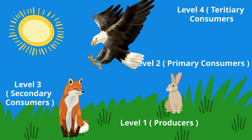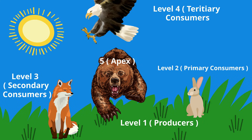Level 5 are called apex predators. They are at the top of the food chain. They are carnivores without any predators, although they may also eat some plants. A grizzly bear would be an apex predator along this food chain.